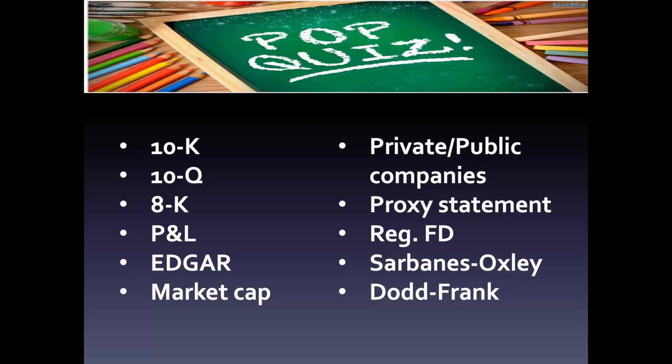A proxy statement is a document that public companies must produce once a year for the annual shareholder meeting. All public companies must hold a meeting with their shareholders once a year, either in person or virtually. Shareholders must approve key operations of the company — specifically, they vote to elect the board of directors, who will guide the company throughout the year. The proxy statement discloses all the information the company believes investors and shareholders need to know for the meeting, including all voting items such as board of directors elections, executive compensation, and other issues to be voted on.